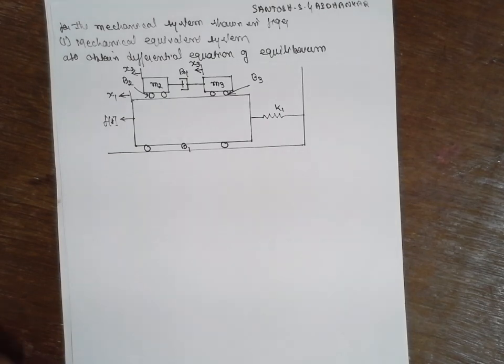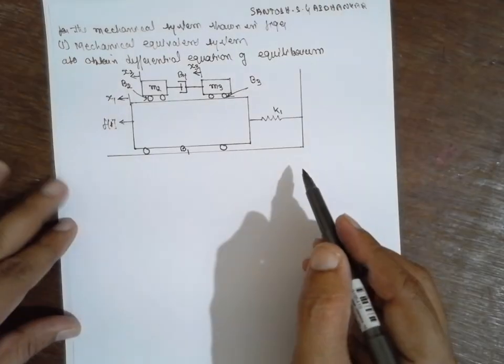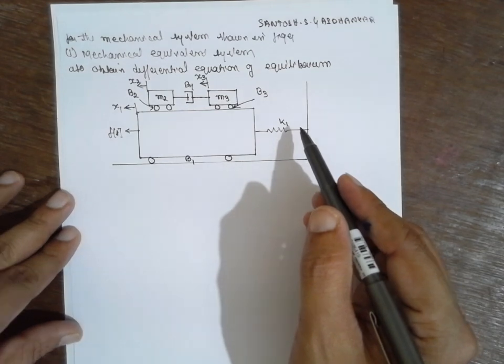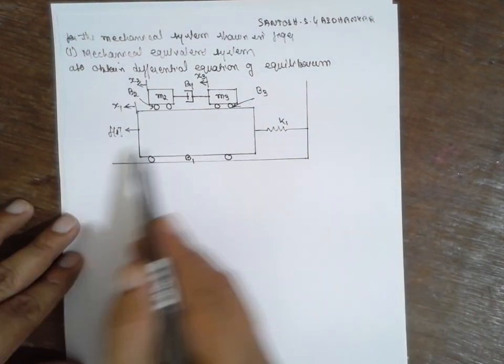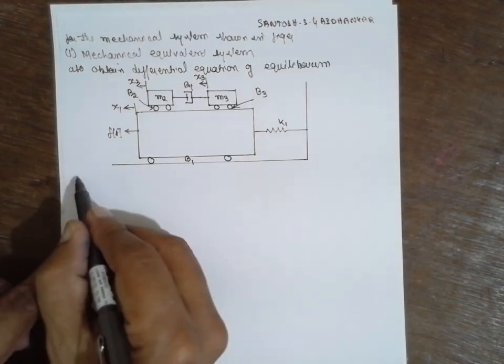Today I am teaching you control engineering, and in control engineering I am focusing on the mathematical model. This is the system given. We have to convert it into a mechanical system first, then I will convert it into an equivalent system.